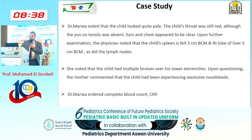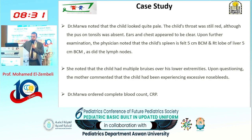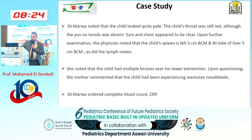On further examination, Dr. Marwa found that the child had a spleen 5 cm below the costal margin, the right lobe of the liver 5 cm below the costal margin, and lymphadenopathy. She also noticed multiple bruises on the lower extremities. When she asked the mother, she said Nora had been bleeding from her gums during the past period. So Dr. Marwa ordered a complete blood count and C-reactive protein.